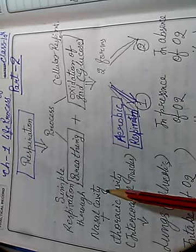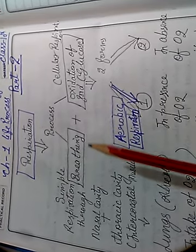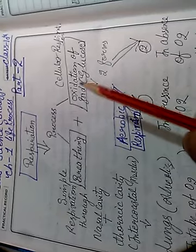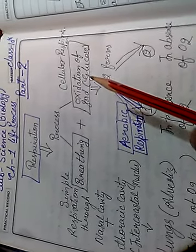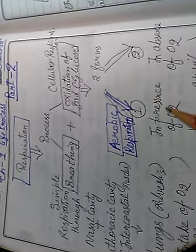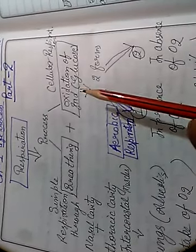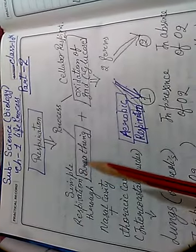The respiration process includes simple breathing — inhaling and exhaling air through the nasal passage or respiratory tract. Air goes into the lungs where oxygen intake takes place. At the cellular level, oxygen reacts with glucose from food, converting it into pyruvic acid. In the presence or absence of oxygen, this oxidation of food produces carbon dioxide, water, and energy.